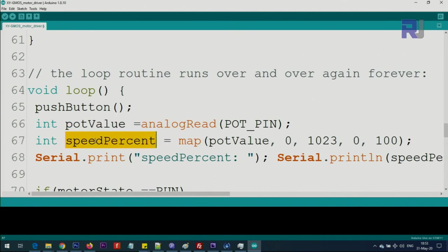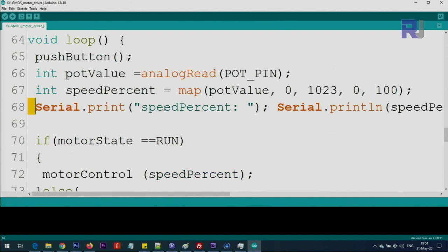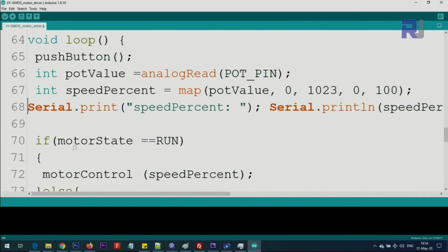Then we convert it to speed in terms of percent. We use map to get this value from zero to 1023 - this is 10-bit which means 2 to the power 10 which is 1024 minus one, so maximum is 1023. We map it between zero and hundred. If the value is zero it will be zero, if the value is 1023 it will be 100, and other values are in between. The result of this calculation will be stored in the variable speed percent. This is just printing the value.